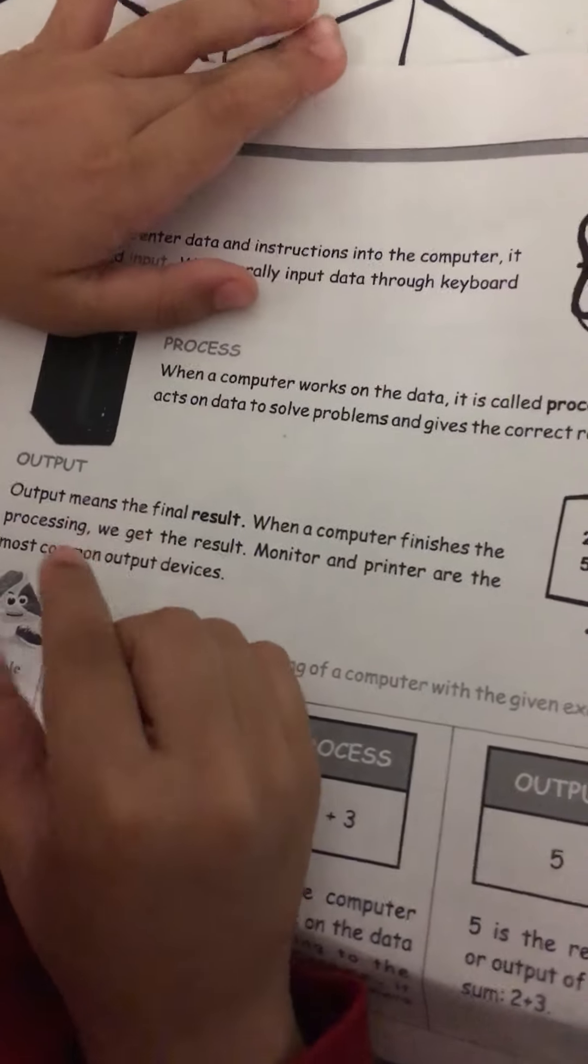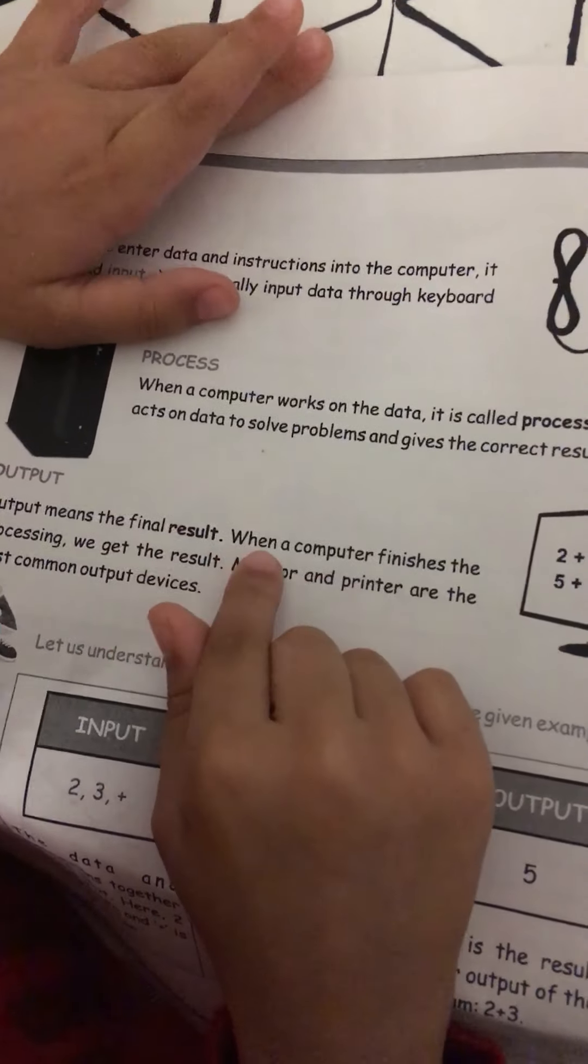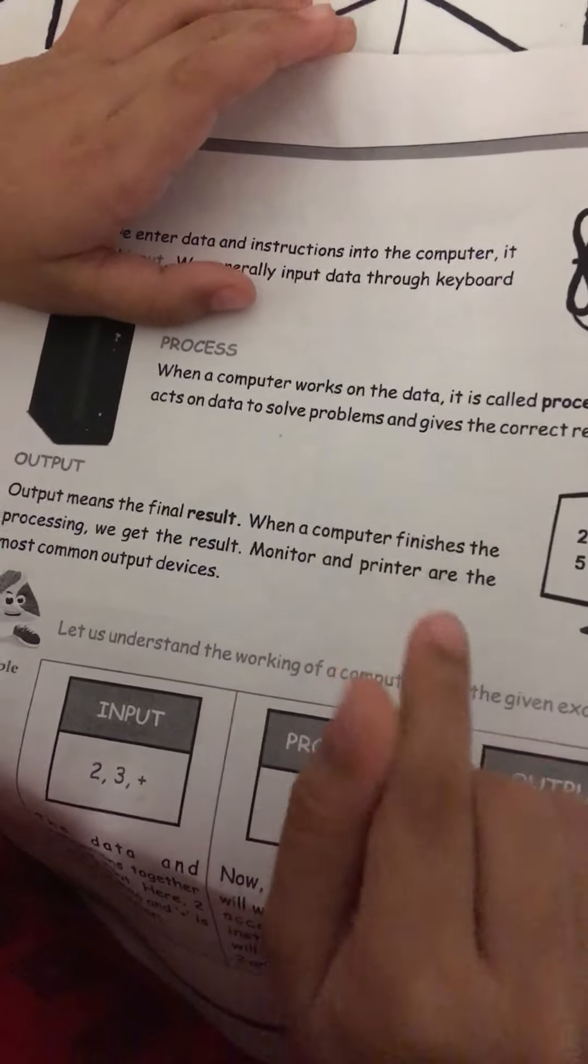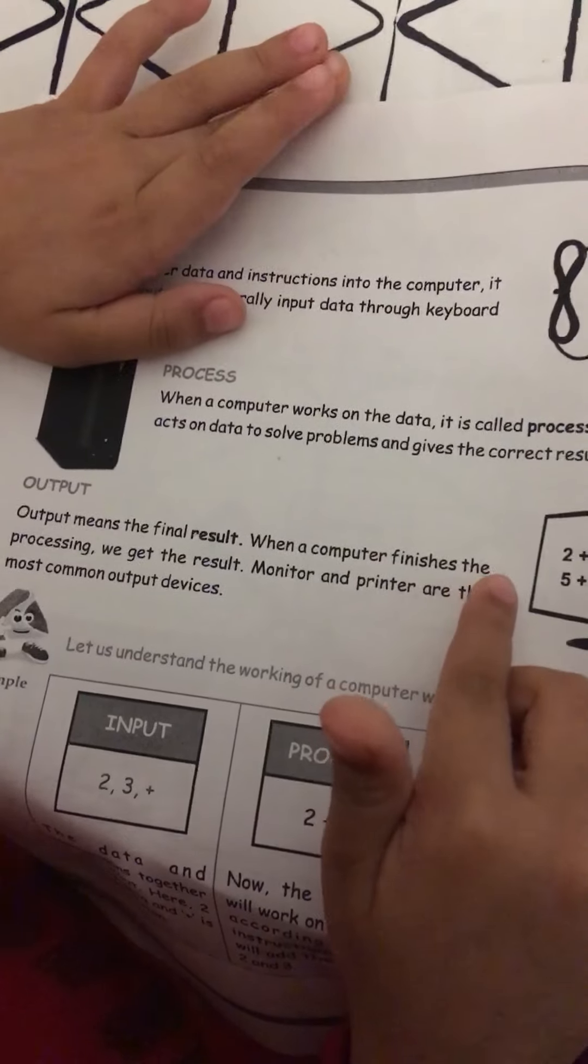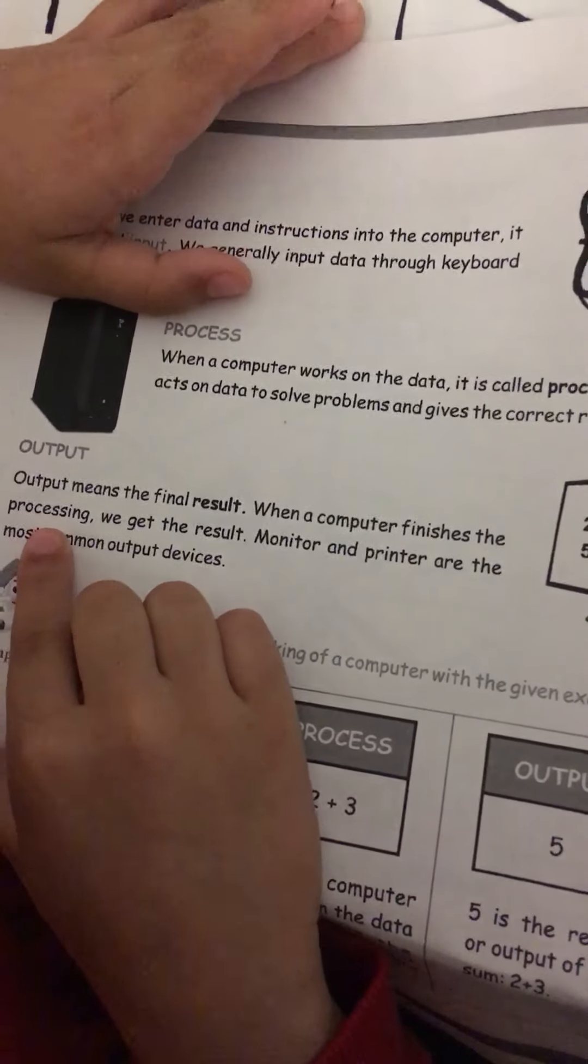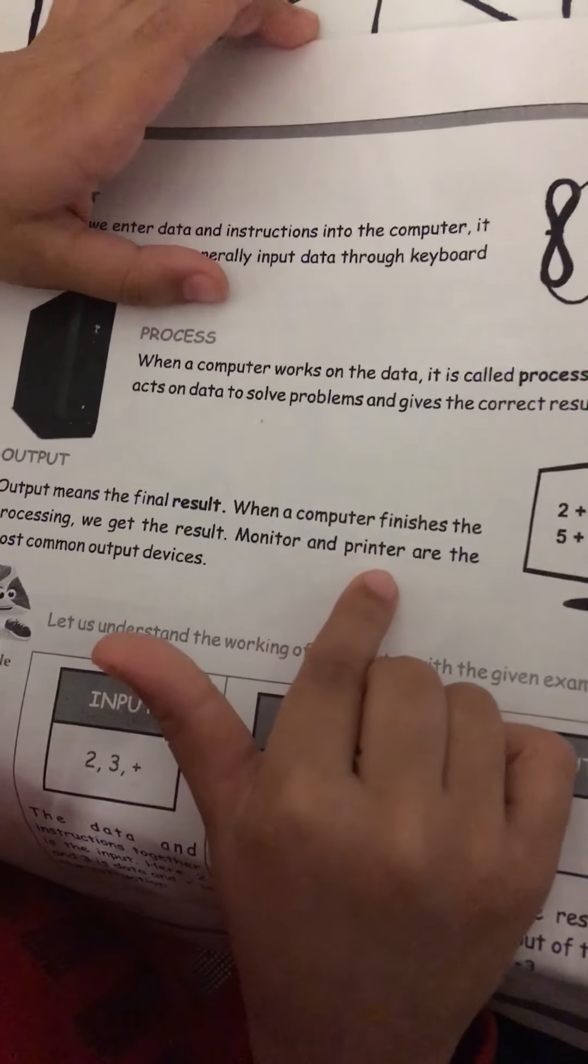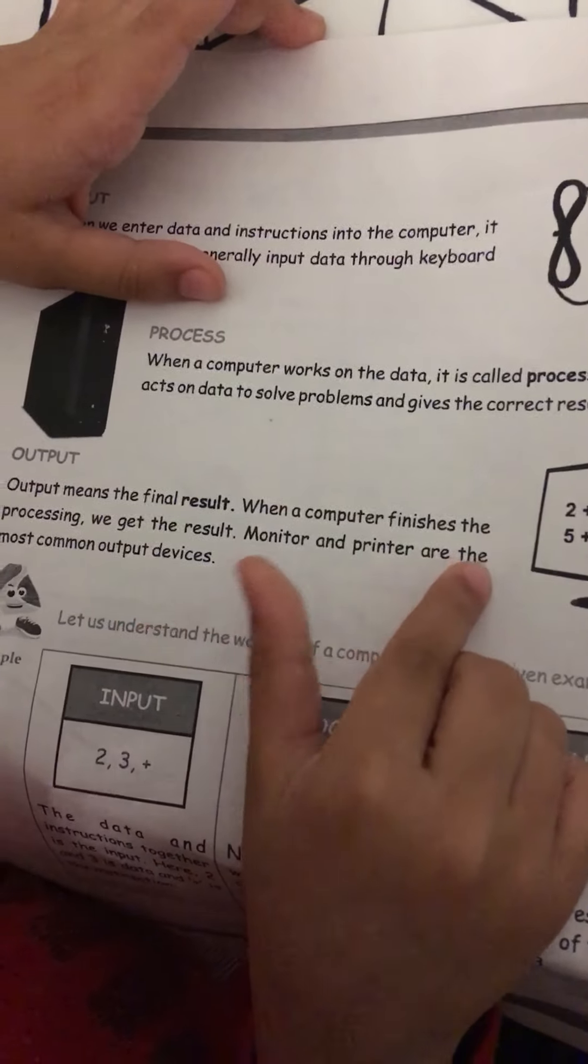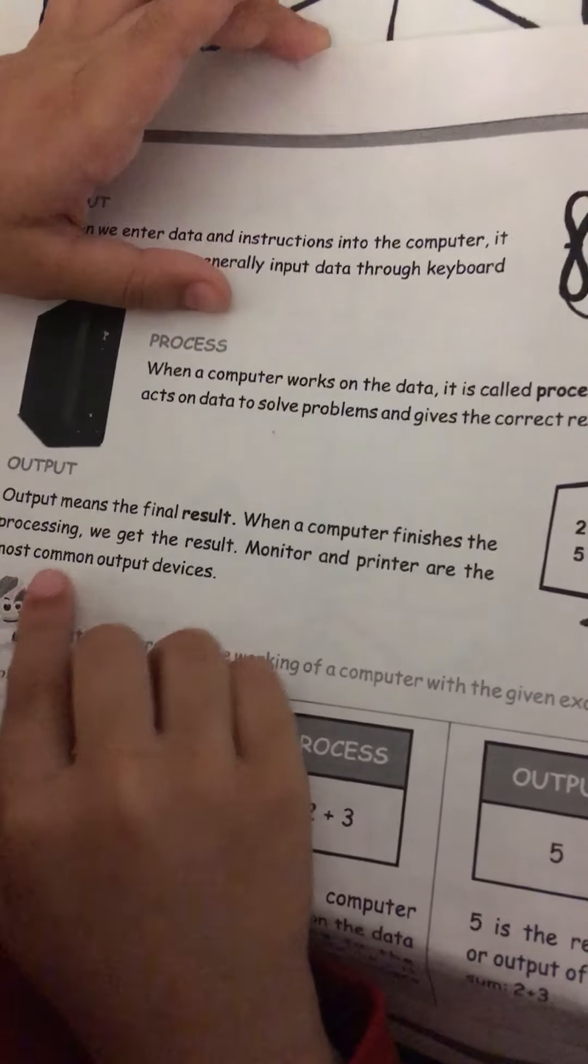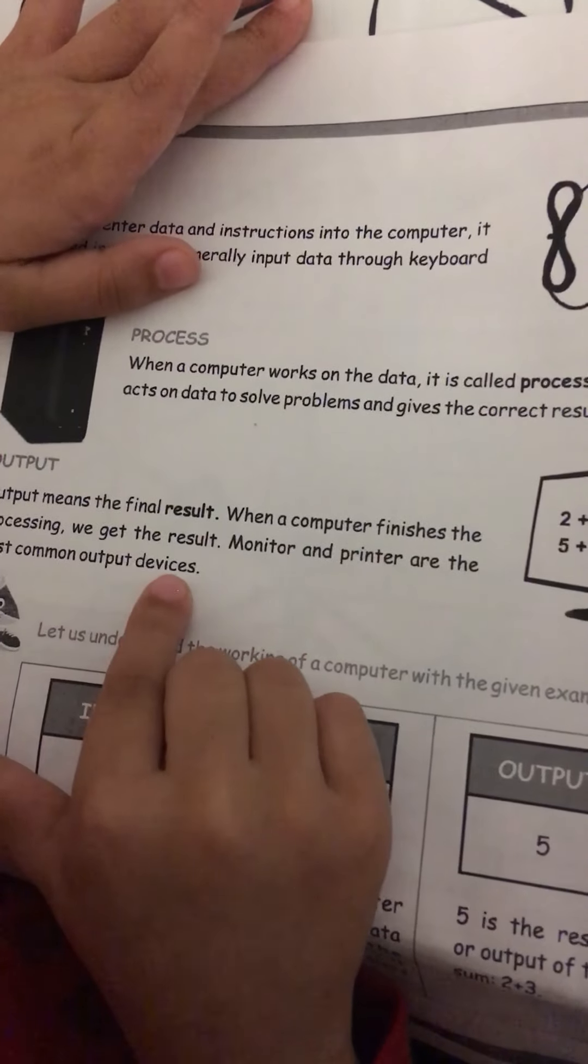Output: output means the final result when a computer finishes the processing. We get the result. Monitor and printer are the most common output devices.